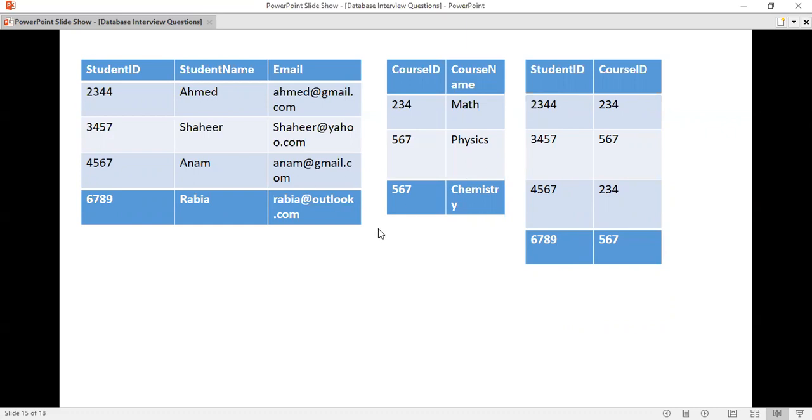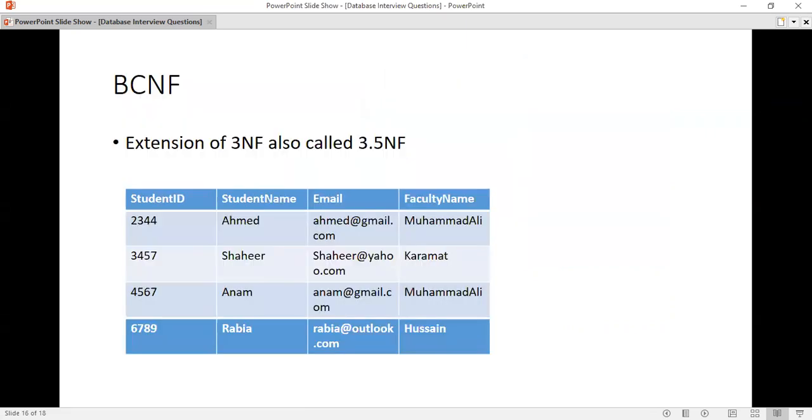Now, we have 3.5 NF or Boyce-Codd normal form. This is a table which I have not converted to 3.5 NF. If you see, the faculty name is repeated here.